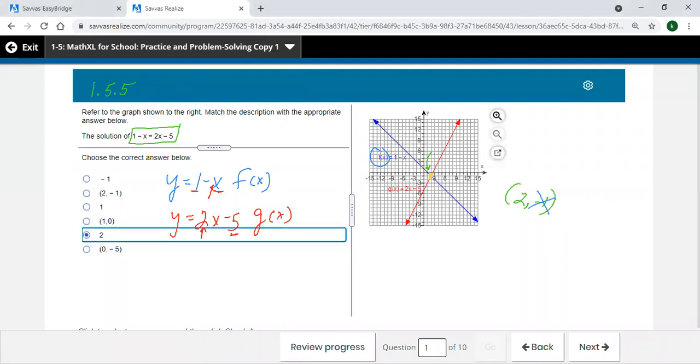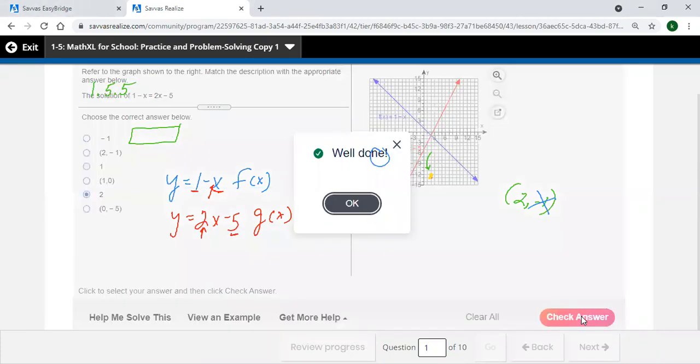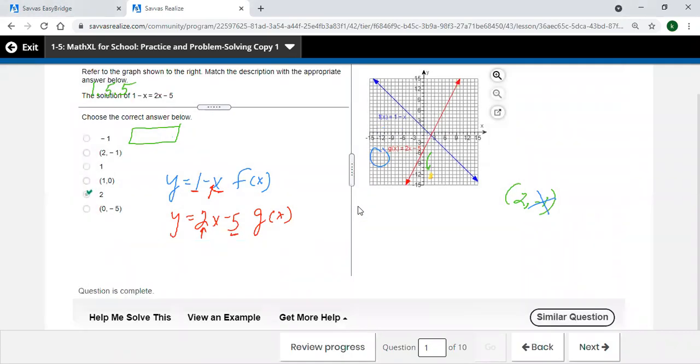And let's see what happens if we check that answer. And that's all you need to do for that problem is whatever your lines are, where they intersect, the x value of that point of intersection is your solution. So there you have it.